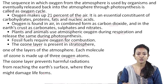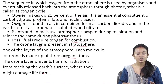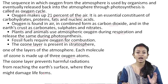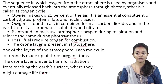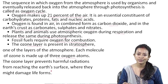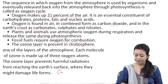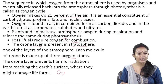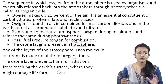The ozone layer prevents harmful radiations from reaching the earth's surface where they might damage life forms. This ozone layer blocks the harmful ultraviolet radiation coming from the sun's rays. Ozone has the formula O3, meaning each ozone molecule is made up of three oxygen atoms.